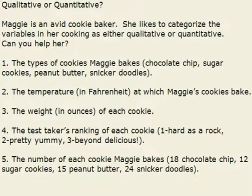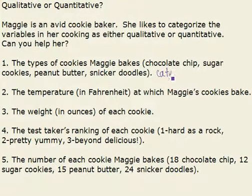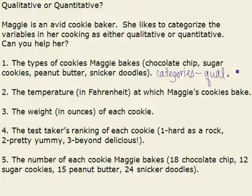We're almost able to decide if they're qualitative or quantitative based off these short previews of what they are. When we're looking at types — in this case types of cookies: chocolate chips, sugar cookies, peanut butter, snickerdoodles — what we're really looking at are categories. And anytime we have categories, we want to think of those as qualitative. We can't quantify them, so they'd be qualitative.